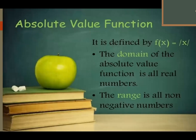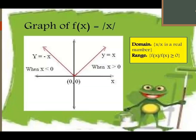Next, absolute value function. Remember, absolute value is always positive — it is the distance from 0 to any number on the number line. From 0 to positive 3 is 3 units. So the absolute value is always positive. The domain here is all real numbers. And the range is from 0 to positive infinity — y is greater than or equal to 0. The graph is open, going up like a V-shape.